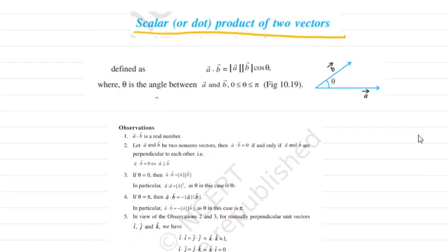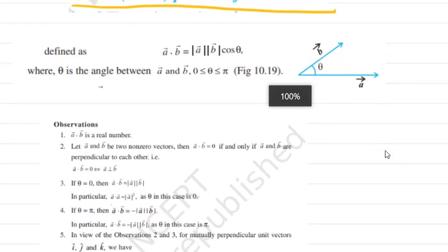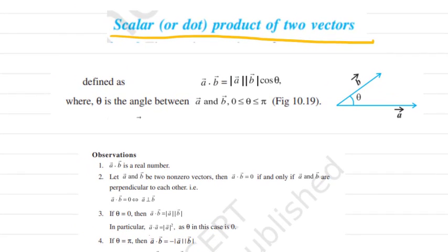The dot product of two vectors a and b, where the angle between them is theta, is given by: a dot b equals the magnitude of a times the magnitude of b times cos theta. This is the formula for the dot product of any two vectors.